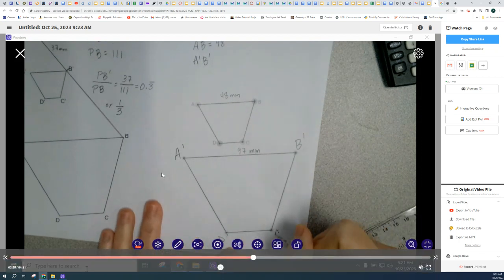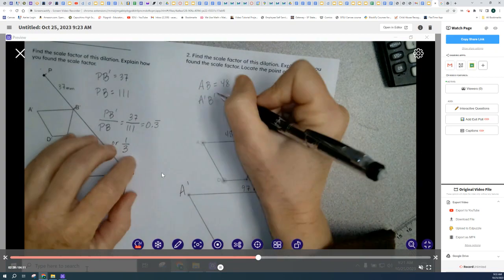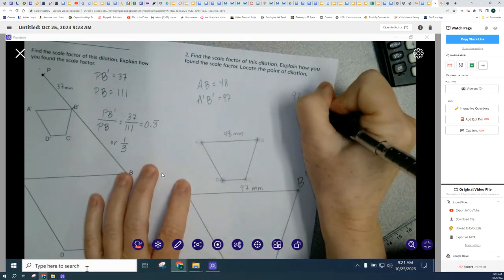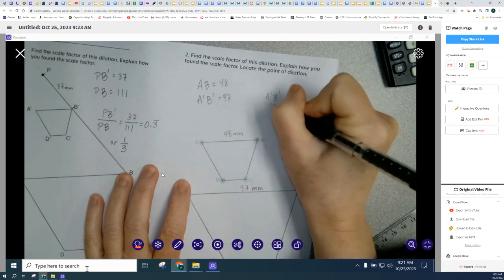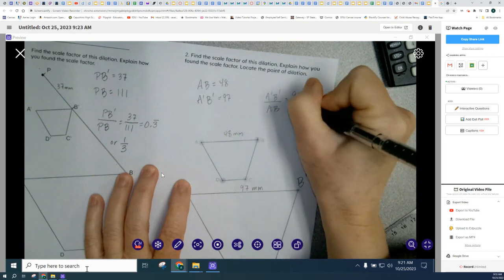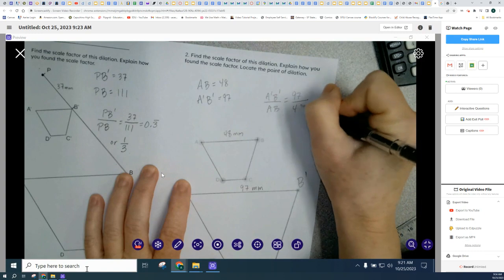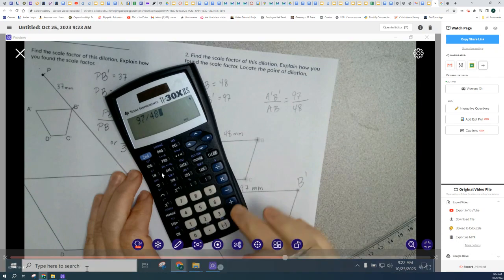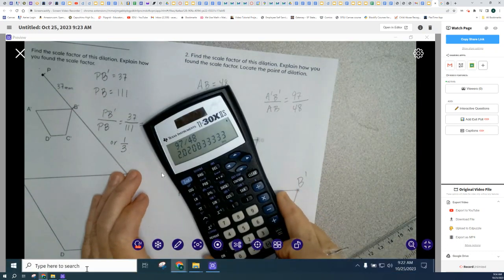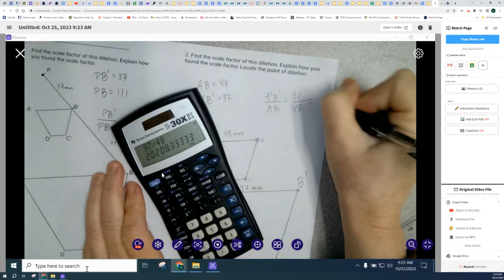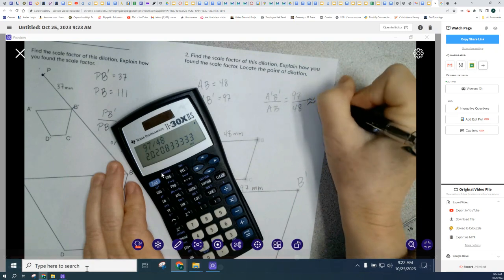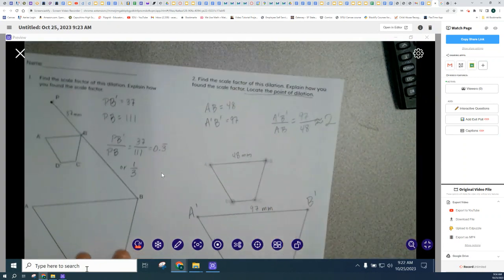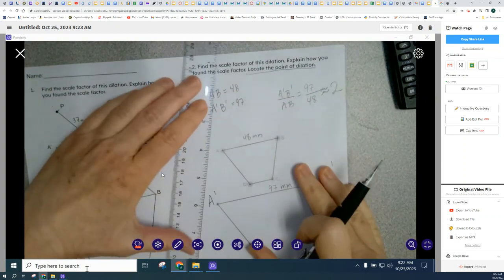Okay. So this time we started with the pre-image was small and then the image ended up getting bigger. So I know that my scale factor has to be bigger than one because it got bigger. So I'm setting up my ratio with a bigger number on top because I know that my image got bigger than the pre-image. So I'm going to need a number that's bigger than one. And that equals a little more than two. So notice I didn't put an equal sign. I put a little squiggly equal sign. That means approximately means I rounded it off.